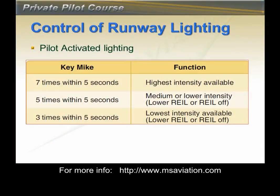Some airports will have runway lights on from sunset to sunrise. Other airports may require the pilot to turn them on from the aircraft — this will be indicated on the aeronautical chart or in the AFD. Airports with pilot-controlled lighting are very common in the United States. To turn on the lights, use the communications radio and click the microphone button: seven clicks activates highest intensity, five clicks activates medium intensity, and three clicks activates low intensity. Pilot-activated airport lighting systems are usually on a timer set to turn the lights off after about 15 minutes.